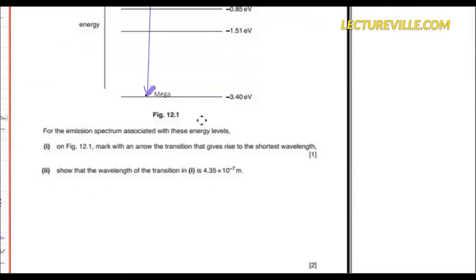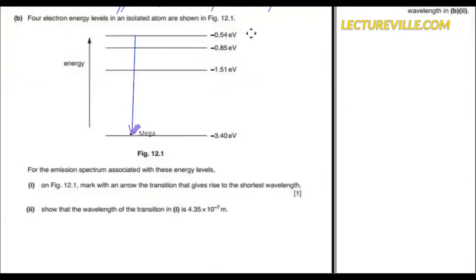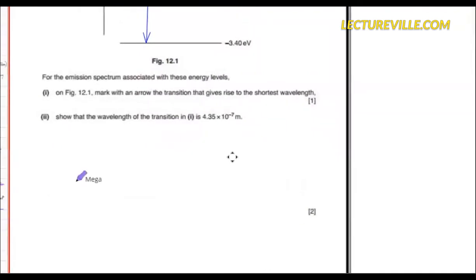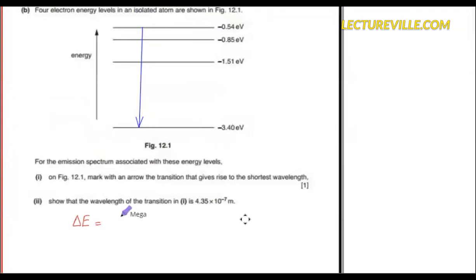Show that the wavelength is this value. The energy here is minus 0.54 eV and the energy here is minus 3.4 eV. The energy released: the change in energy is minus 0.54 minus (minus 3.4) eV.